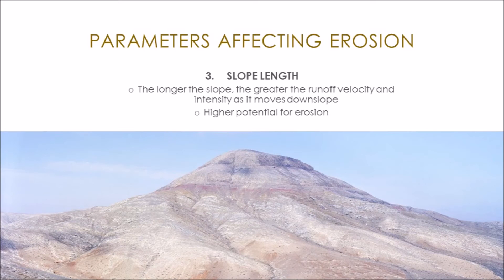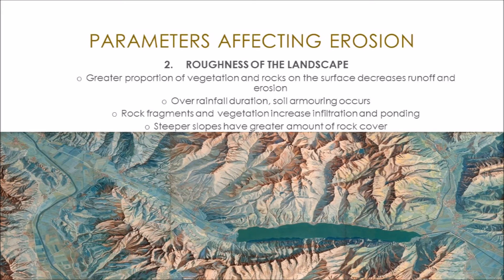A landscape can become rougher over time due to the process of armouring, where the finer particles are detached first, leaving larger rocks and sediments behind which are more resistant to flow. The rock fragments affect runoff differently to a normal soil layer, as they increase infiltration and ponding and reduce runoff. Vegetation also acts as armour due to the foliage and mounds it creates, increasing infiltration and decreasing runoff.